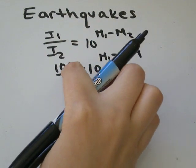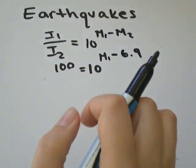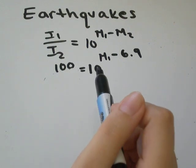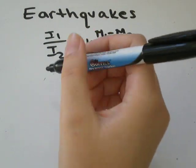So 100 over 1 is the same as just 100, because 100 divided by 1 is 100. So to figure out what this is, I'm just going to take the log of both sides.